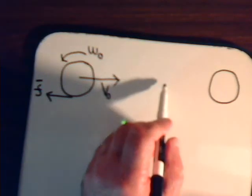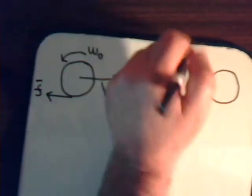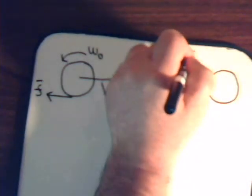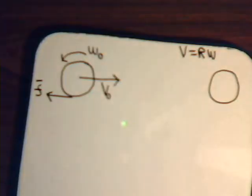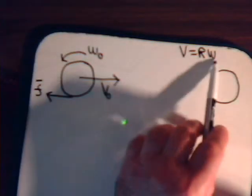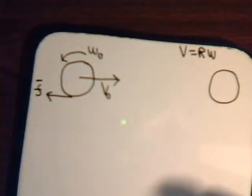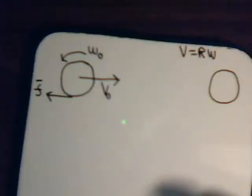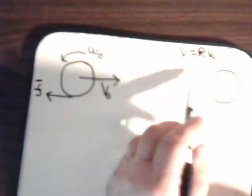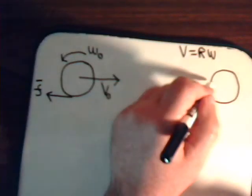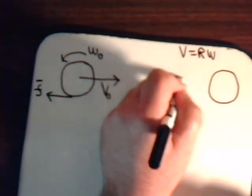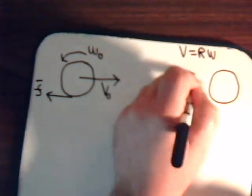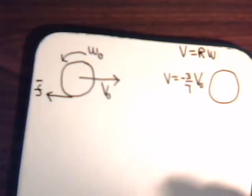When it rolls backward, it's in pure roll. Whatever the velocity is at that time, it has to equal r times the angular velocity — that's the condition for pure roll derived back in video 30. In the last video, we said that the velocity at the moment it just starts to roll back is minus three-sevenths its initial velocity.